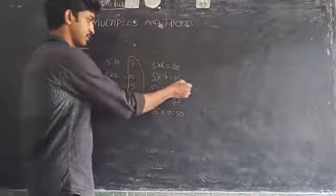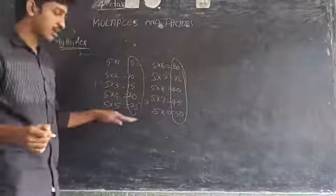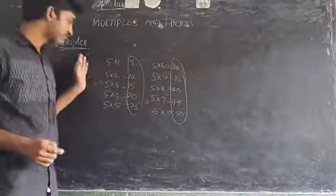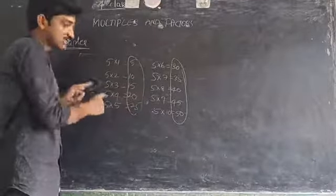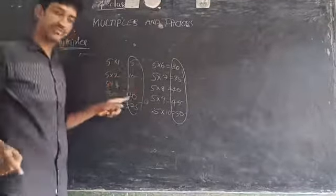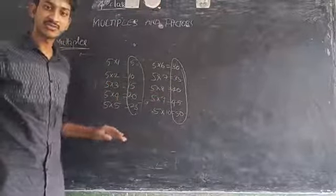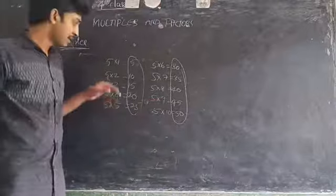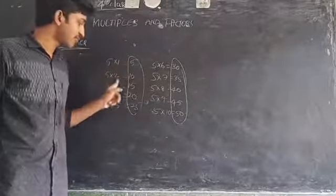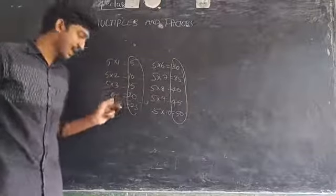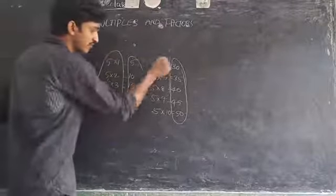The numbers 5, 10, 15, 20, 25 and so on are called the multiples of 5, because 5 is multiplying every number to get these products. The factors are: 5 has factors 5 and 1; 10 has factors 5 and 2; 15 has factors 5 and 3; 20 has factors 5 and 4. These are called factors.